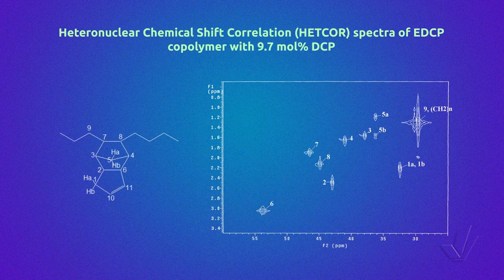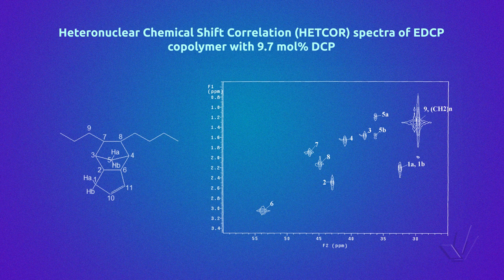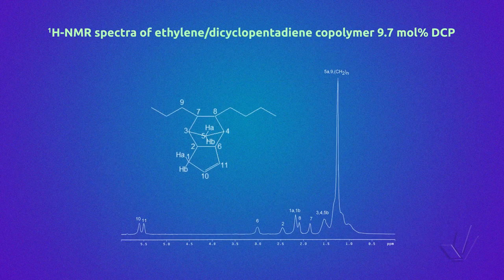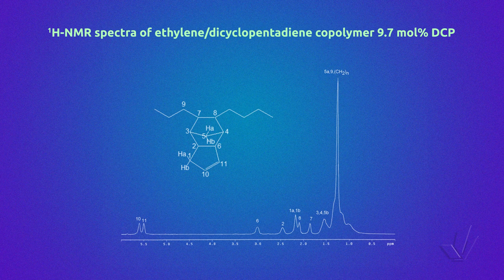Heteronuclear chemical shift correlation HETCOR spectra of the EDCP copolymer with 9.7% DCP have been done to assign the peaks of the proton NMR spectrum. In this technique, carbon-13 NMR is correlated with the proton NMR. Here we have the proton NMR of this copolymer. The assignment of all the peaks was only possible thanks to the 2D HETCOR spectrum, because in the proton spectrum the resonances were more difficult to determine due to the superposition of signals. So in this case, the interpretation of the carbon-13 NMR helped to assign the proton spectrum.